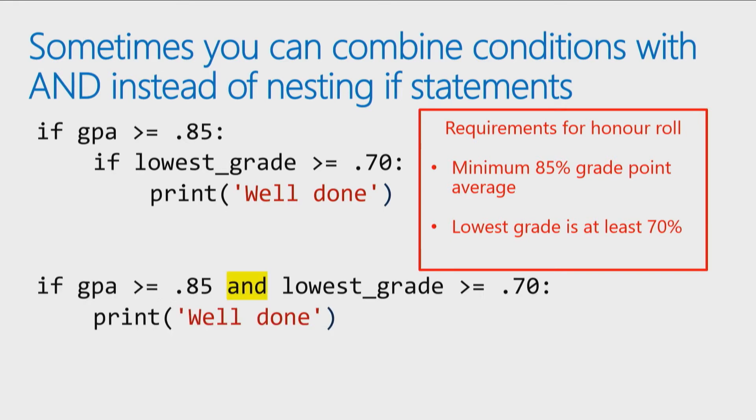But I could rewrite this using an AND statement, because what I'm really saying is there's two requirements here. Both those requirements have to be met for you to make the honor roll. That's what ANDs are for. So I can simply say if the GPA is over 85, and your lowest grade is greater than or equal to 70 percent, then well done, you've made the honor roll. And it's a little bit easier to read, and again, you don't have that risk of accidentally making a mistake with indenting your code. So it reduces the chance of introducing errors by forgetting to indent something.